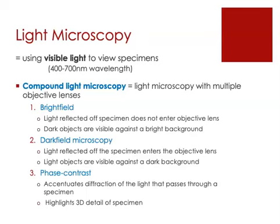Dark field is essentially the opposite. The light that's reflected off of the specimen actually enters the objective lens, and what that produces is a very light-looking object against a very dark background. That's dark field.